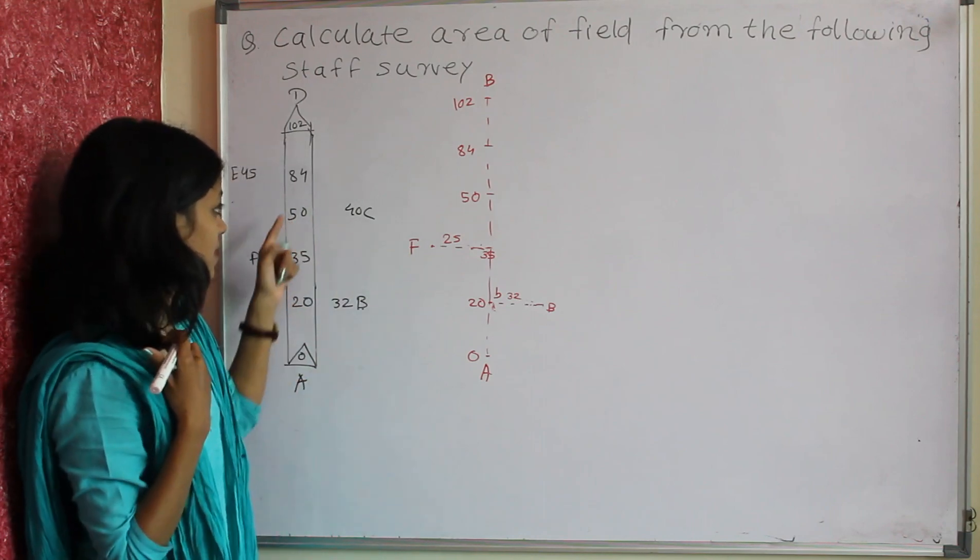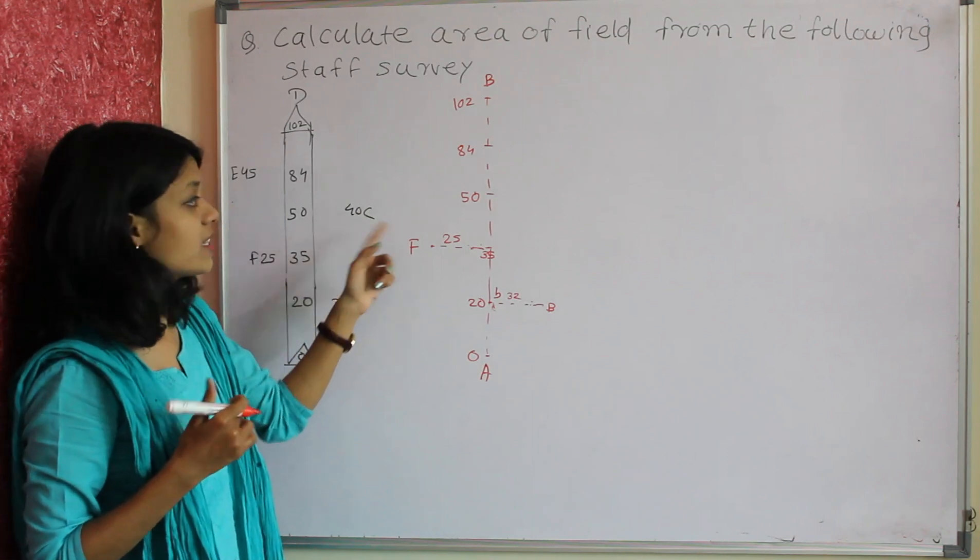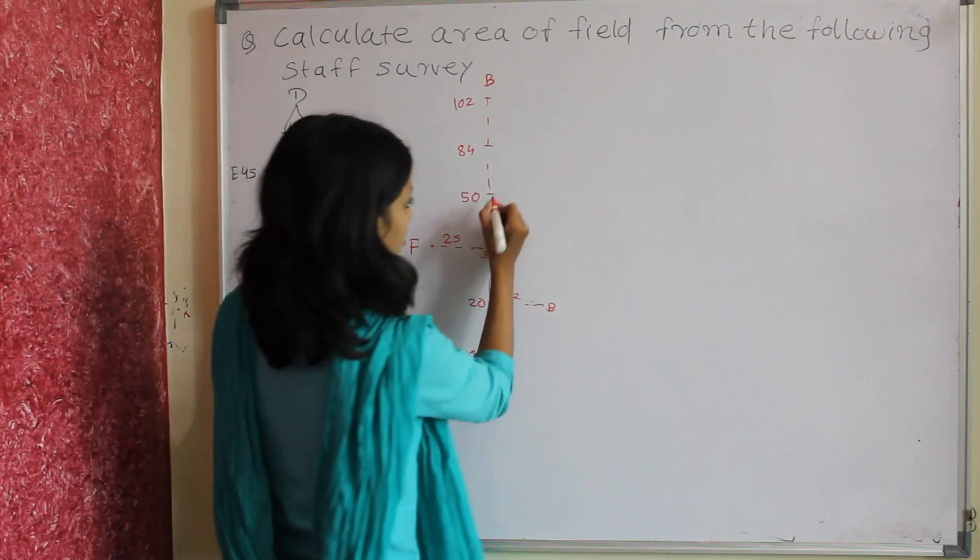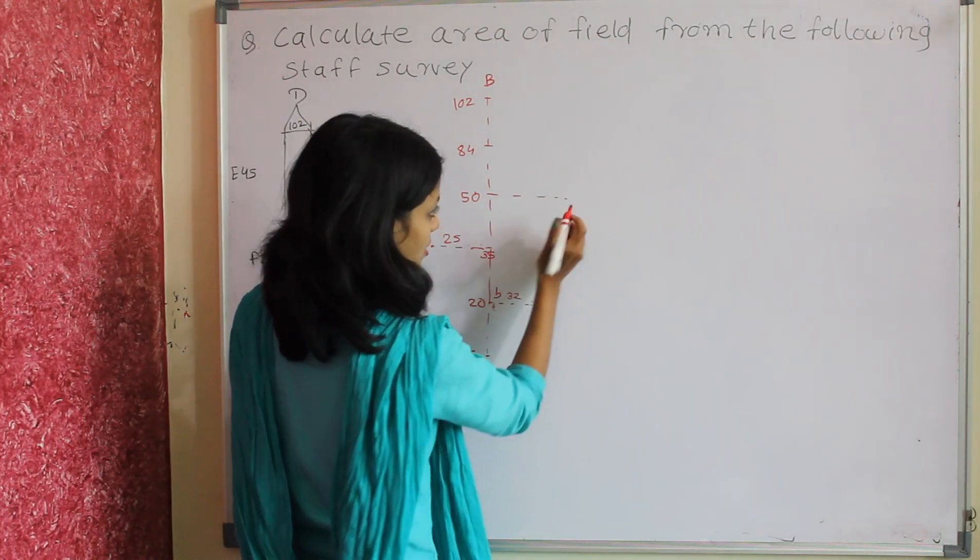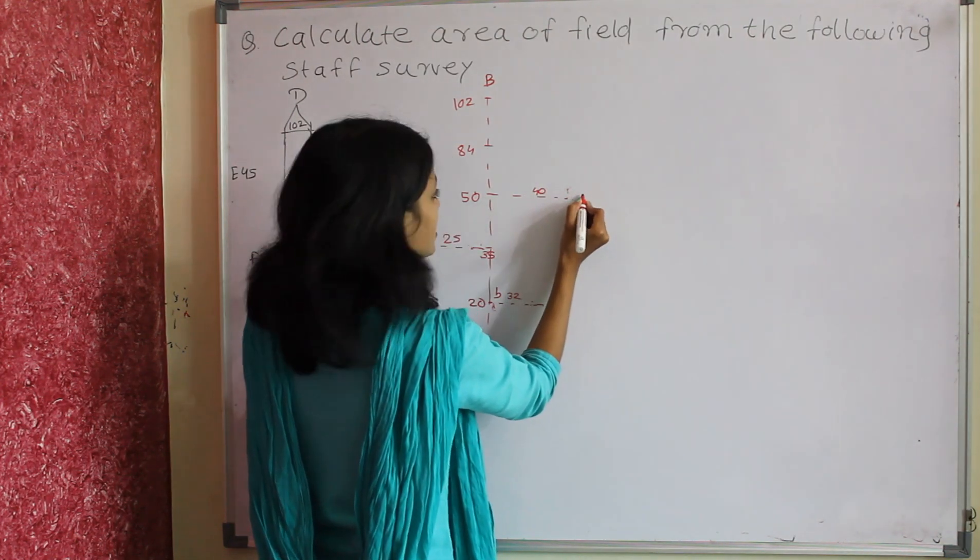Then at 50 meters chainage from the starting point, the offset is 40 meters at right hand side. This is point C at 40 meters.